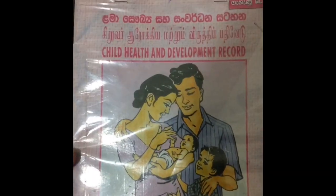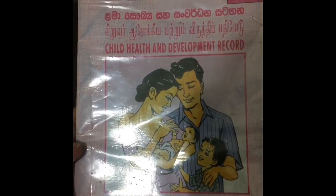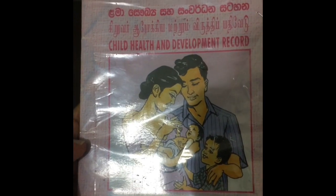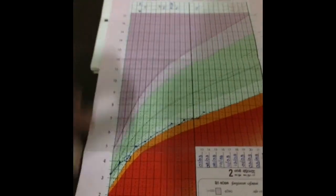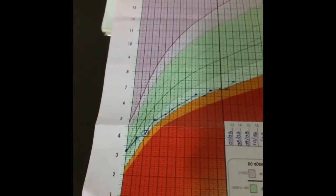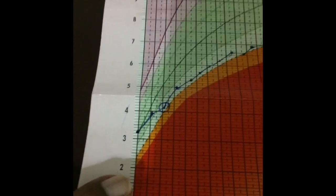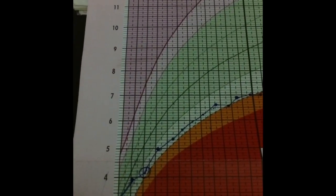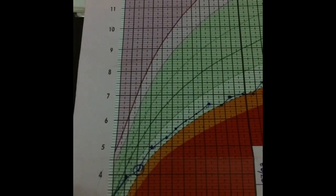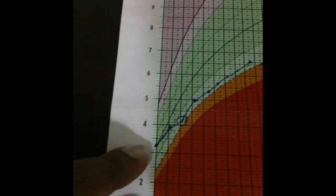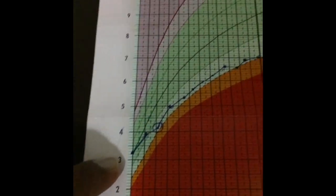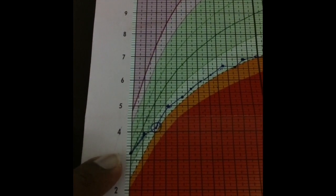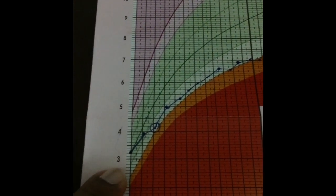In long case, there's a favorite question of the examiner: interpret the child health record, the weight gain versus age. First, you have to see the birth weight. Here you can see the birth weight is around 3.2 kilograms, so you can tell the birth rate has been satisfactory. That means about 2.5 kilograms of birth weight is satisfactory.